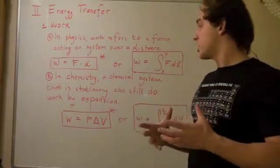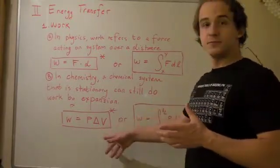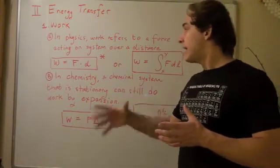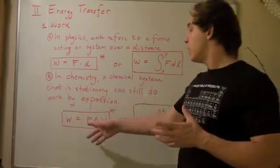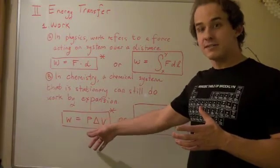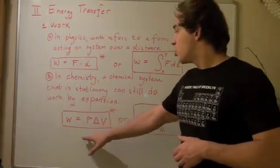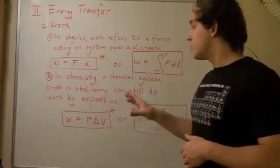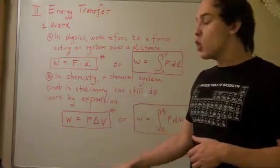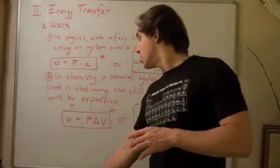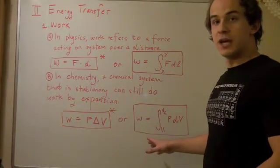Expansion work is called PV work. You find the work done by multiplying the pressure when it's constant by the change in volume. This equation only holds when the pressure is constant. When the pressure isn't constant, we have to use the integral.